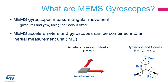What are MEMS gyroscopes exactly? While accelerometers measure linear acceleration as long as there is no rotation, MEMS gyroscopes generate an output signal directly proportional to the angular rate applied to the device. To do this, they measure the force generated by what is known as the Coriolis effect.